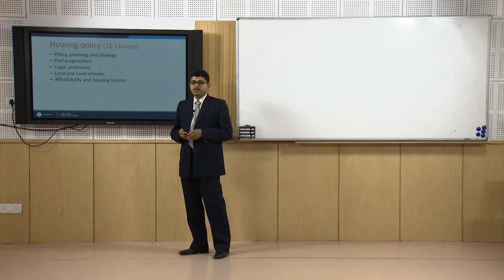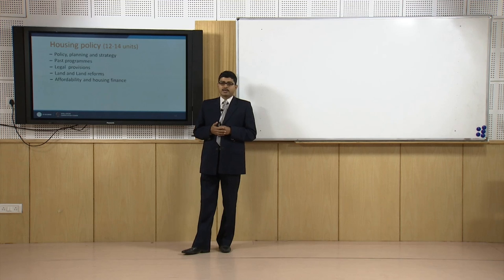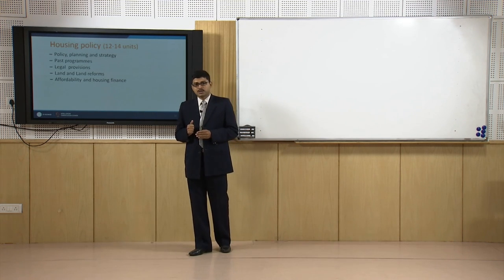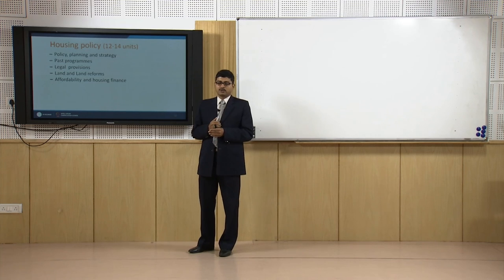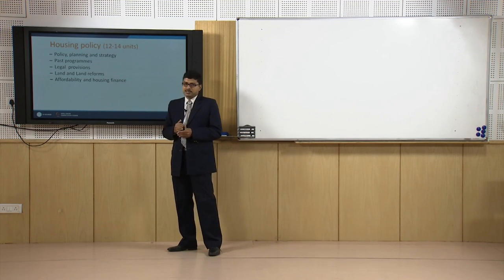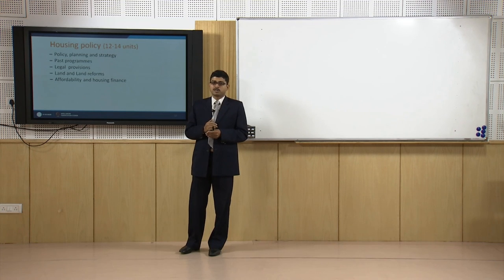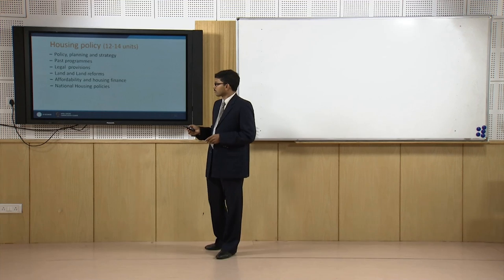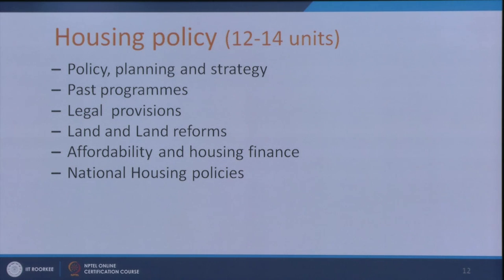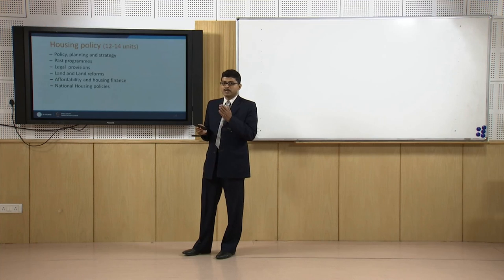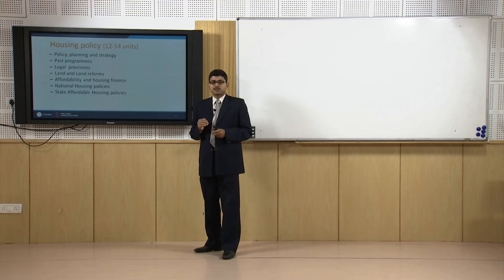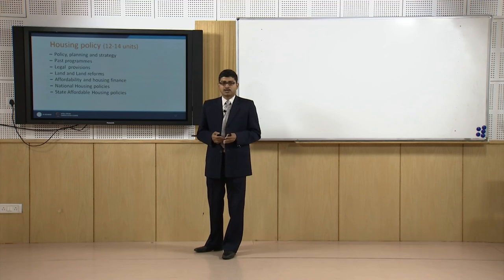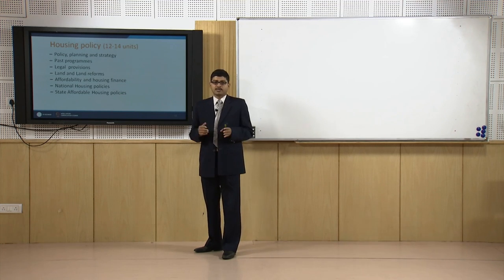We will thoroughly discuss the affordability aspect. India has a large population in the economically weaker section, BPL, and lower income groups. How we can supply more houses within their affordable limit—with or without government subsidy—and how housing finance can help them procure a better and bigger house will be covered. We will also cover national housing policies, their major directions, and learnings from the first to subsequent policies, as well as salient features of state housing policies and how a state government can formulate policy for each housing category.